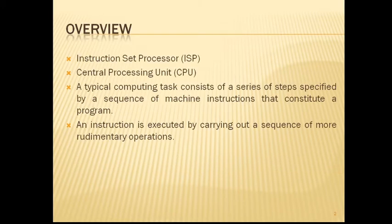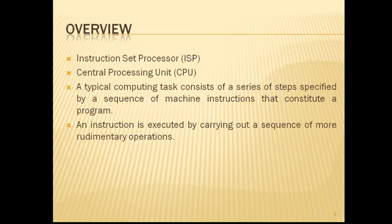In this module, we will be focusing on the processing unit which executes the machine instructions and coordinates the activities of other units. This unit is also called as Instruction Set Processor, that is ISP, or you can also call it just a processor. We will examine its internal structure and how it performs tasks like fetching, decoding, and executing the instructions of a program. This processing unit can also be called as Central Processing Unit, that is CPU. The term 'Central' is less appropriate because many modern computer systems include several processing units.